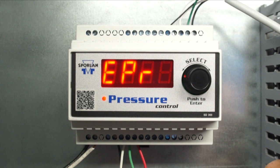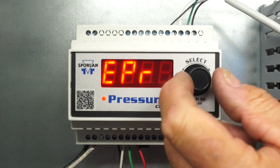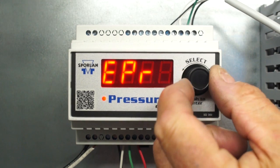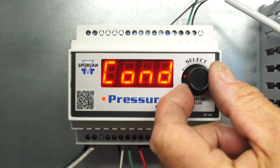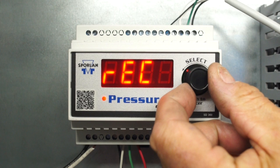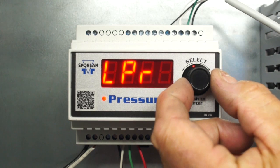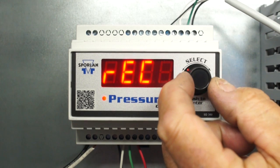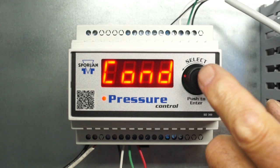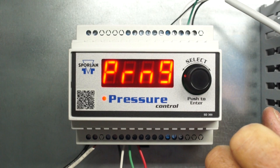Press and then turn the select knob to set the application. For low side applications, select evaporator pressure regulator, EPR. For high side applications, select condenser pressure regulator, COND. This is the holdback. Select REC for receiver pressure regulator or LPR for liquid pressure regulator. Once you have chosen an application, press the select knob to save the value.